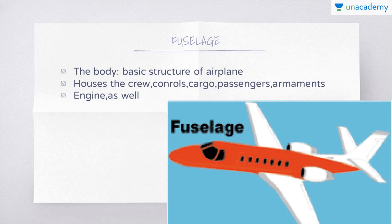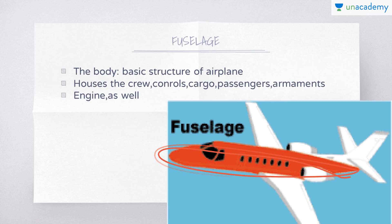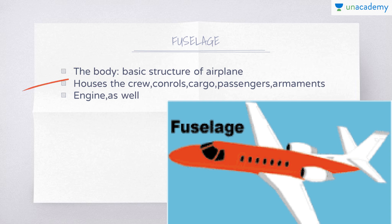The first part we'll study is the fuselage. In the picture, the body shown in red is the fuselage — it is where we sit and is the main body of the airplane. The fuselage is the basic structure of the airplane; it houses the crew, controls, cargo, passengers, and armaments. It also mounts the engine, and the wings and tail assembly are all attached to it.